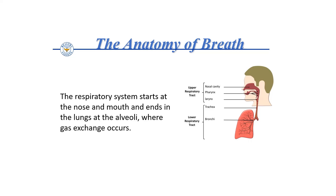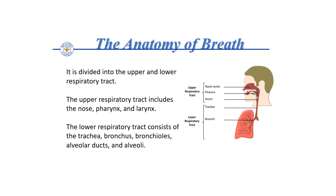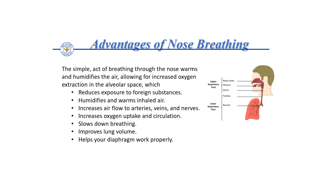The respiratory system starts at the nose and mouth and ends in the lungs at the alveoli, where gas exchange occurs. It is divided into the upper and lower respiratory tract. The upper respiratory tract includes the nose, pharynx, and larynx. The lower respiratory tract consists of the trachea, bronchus, bronchioles, alveolar ducts, and alveoli.